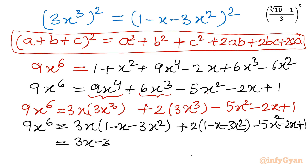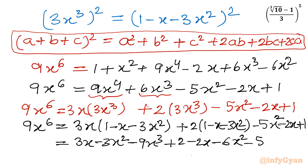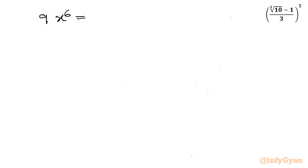Expanding the RHS: 3x minus 3x square minus 9x cube, plus 2 minus 2x minus 6x square, then minus 5x square minus 2x plus 1. The left hand side is 9x power 6. Now let's simplify the RHS. After simplification: 9x power 6 equal to minus 9x cube minus 14x square minus x plus 3.